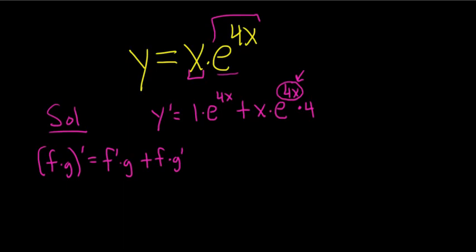Let's double-check that. So it's the derivative of the first, which is 1, times the second, plus the first, times the derivative of the second piece. The derivative of e to the x is e to the x, so here it's e to the 4x, times the derivative of 4x, which is 4.